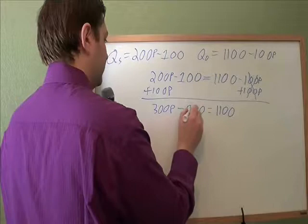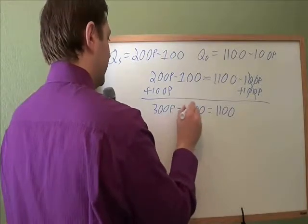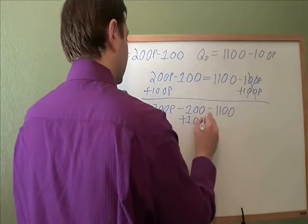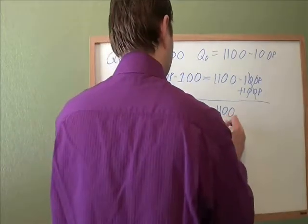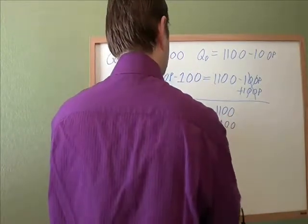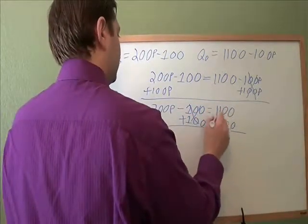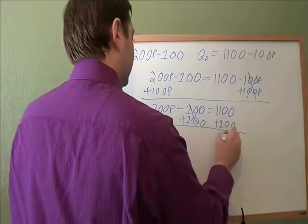We want this p by itself. Our next step is to move this minus 100 over. To get rid of minus 100, we use its opposite, plus 100. 100's cancel out. 1,100 plus 100 is 1,200.